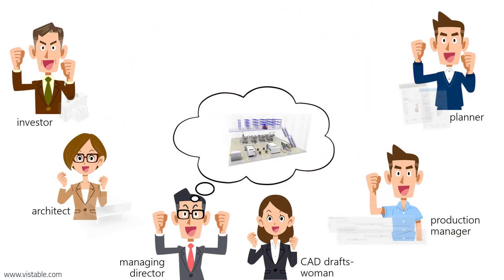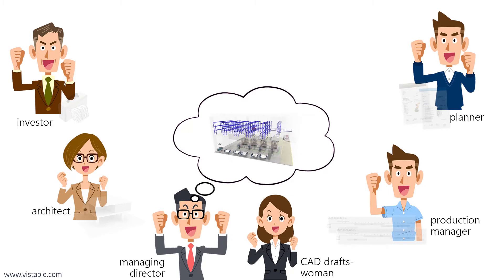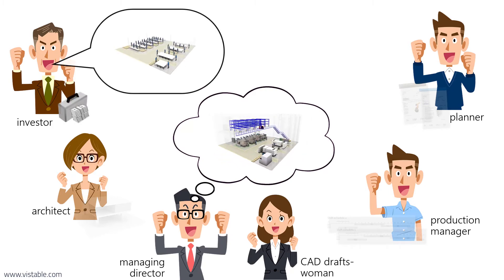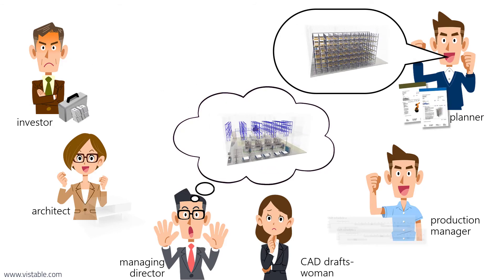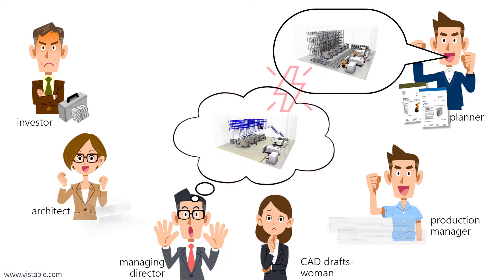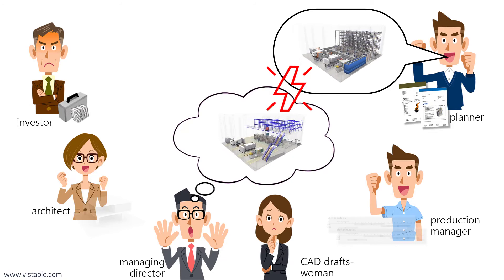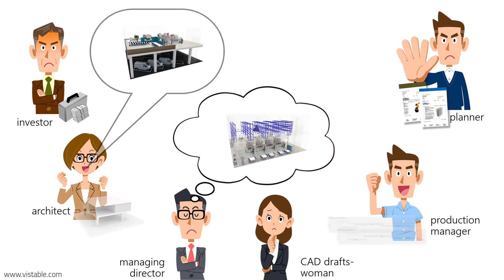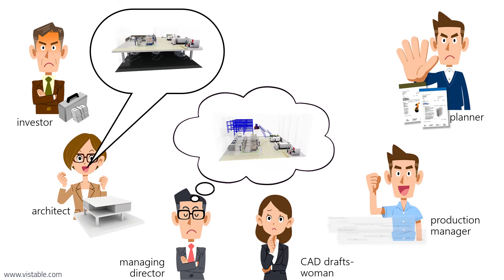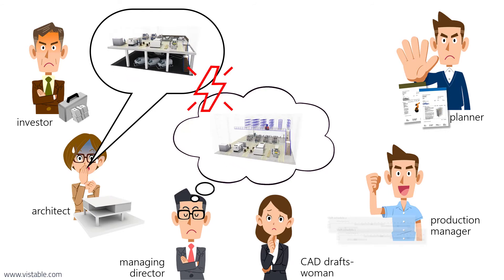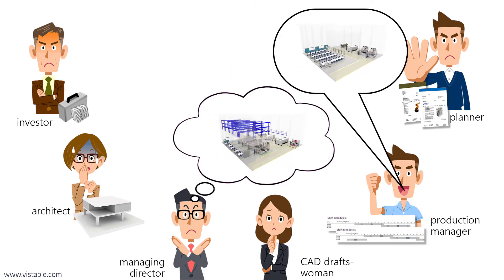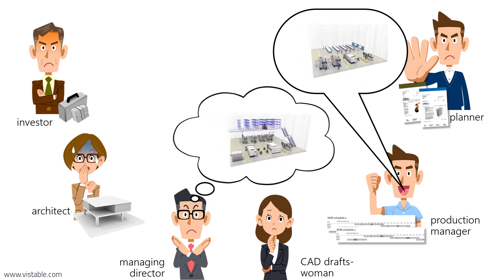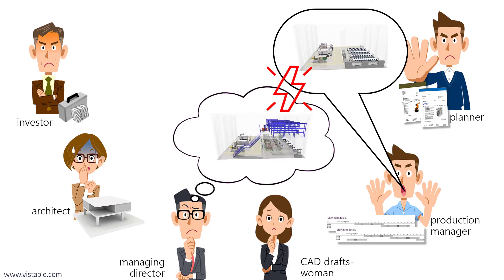After some time, the team comes together to continue working on the project. Everyone looks forward to presenting their own thoughts and ideas. The investor presents his plan and budget, which absolutely does not fit with the ideas of the managing director. Afterwards, the planner presents his solution with offers and calculations for production and logistics technology — pointing in a completely different direction. The managing director is very dissatisfied. Then the architect presents her solution with the parking lot under the new building and her cardboard model, which turns out to be a misunderstanding. Finally, the foreman presents his company canteen solution and new break and shift calendar, much to everyone's surprise.